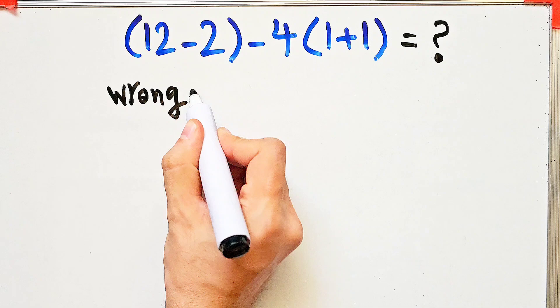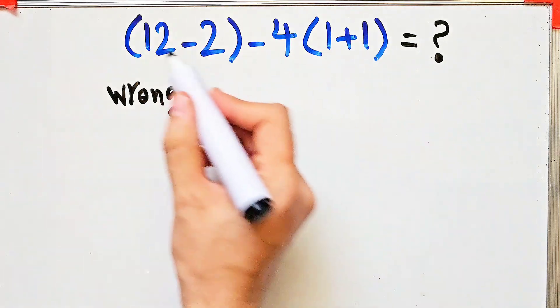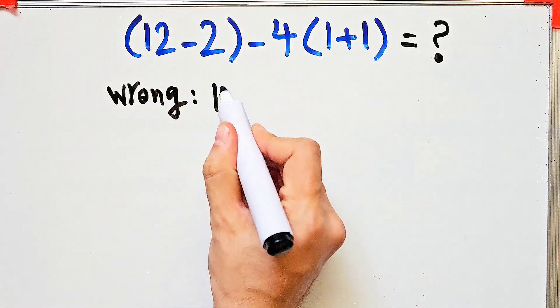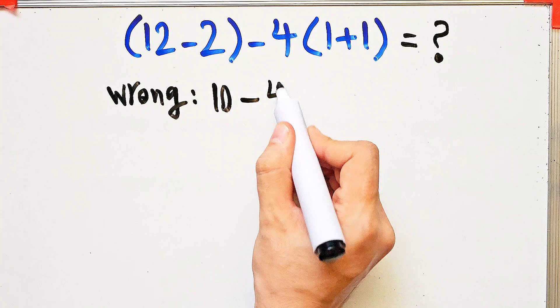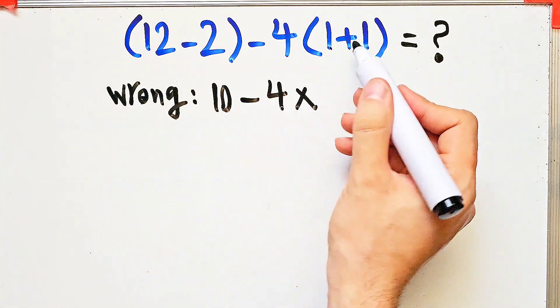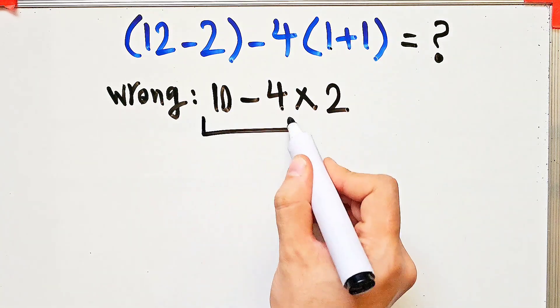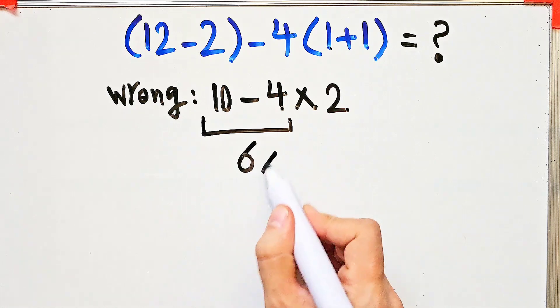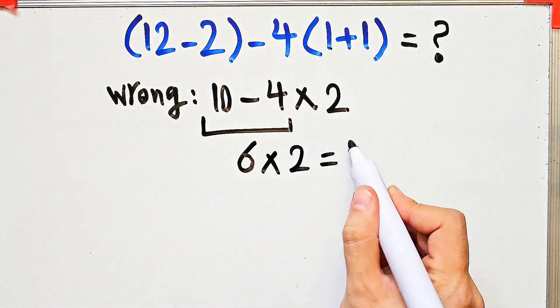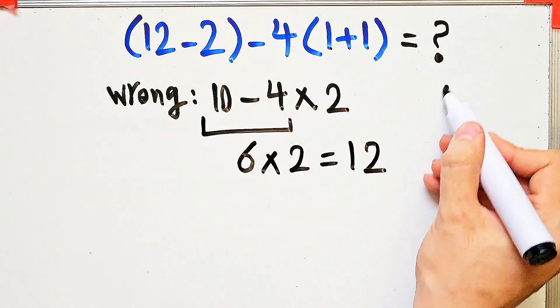12 minus 2 equals 10. 10 minus 4, then times 2. 10 minus 4 equals 6, and 6 times 2 equals 12. But this answer is definitely wrong.